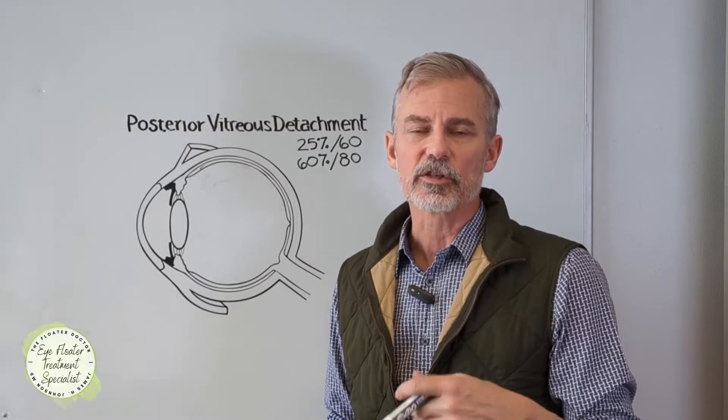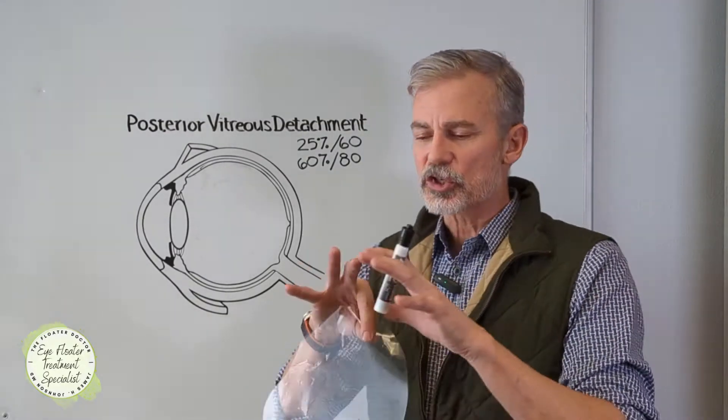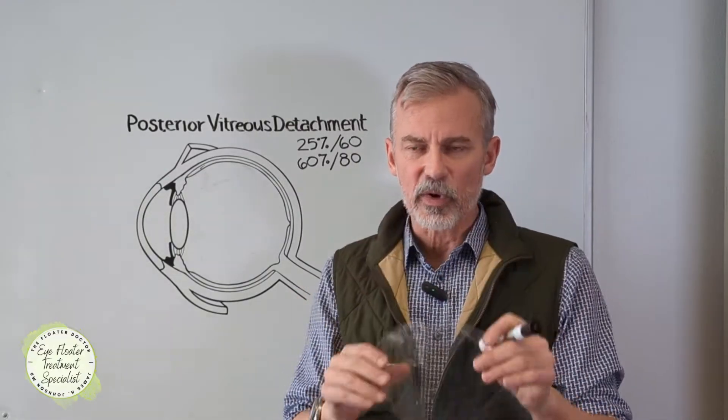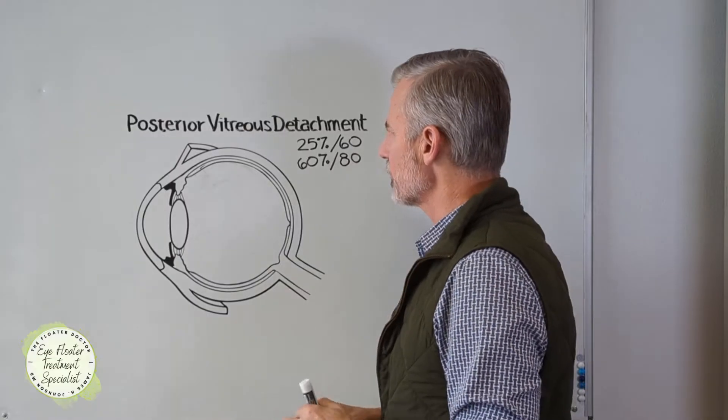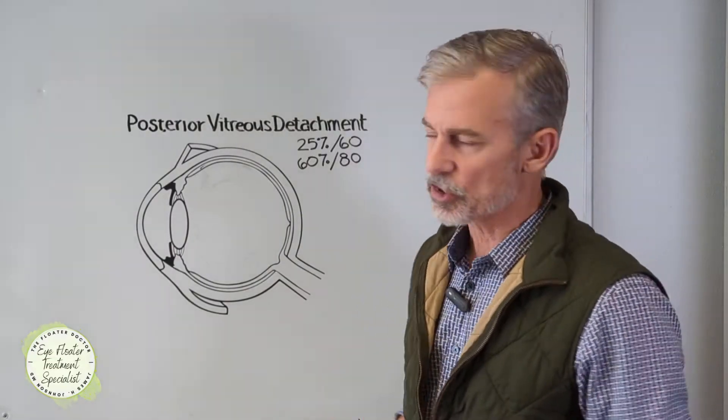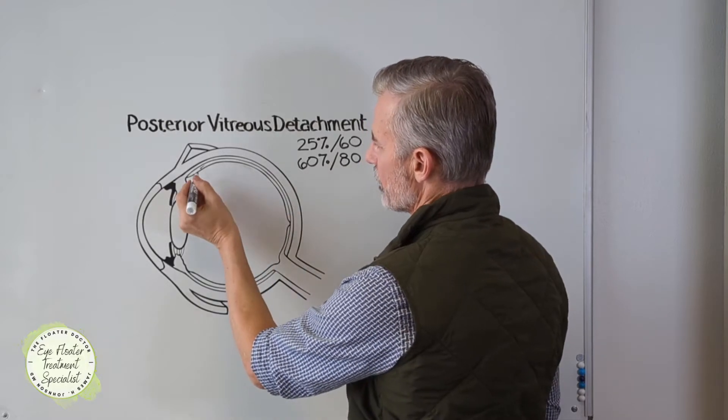The vitreous is mostly water. There's some proteins. There's some fancy complex sugars in there. That gel is surrounded by a plasticky membrane, like a baggie or a sac. What happens with a posterior vitreous detachment is that there is a separation of the back part of that sac away from the back part of the eye.